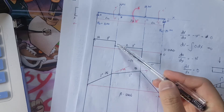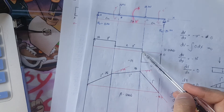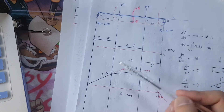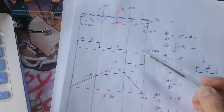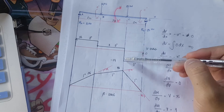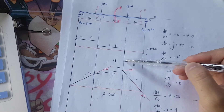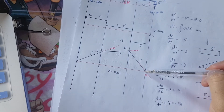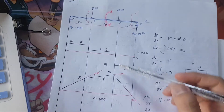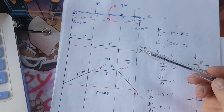Then we have 4 times a distance of 3, which is 12, so 36 plus 12 is 48. Then we have negative 24 times 2, which is negative 48, so positive 48 minus 48 equals 0. If you observe closely, it is simply the area of the preceding shear diagram.